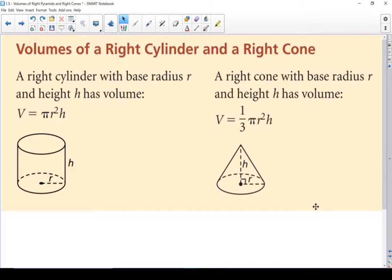Volumes of a right cylinder and a right cone. A right cylinder with base radius r and height h has volume pi r squared times h.